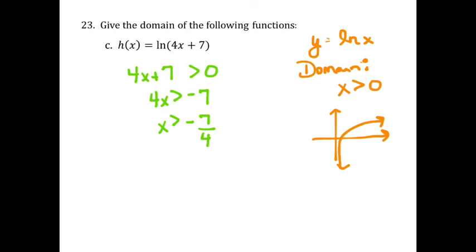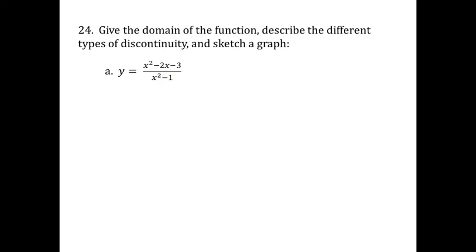Let's move on to question 24. In this question, both functions are rational functions, and it's asking us to give the domain, describe the different types of discontinuity, and sketch a graph. With rational functions, we can have two types of discontinuity: one is just a hole, and the other type is a vertical asymptote.